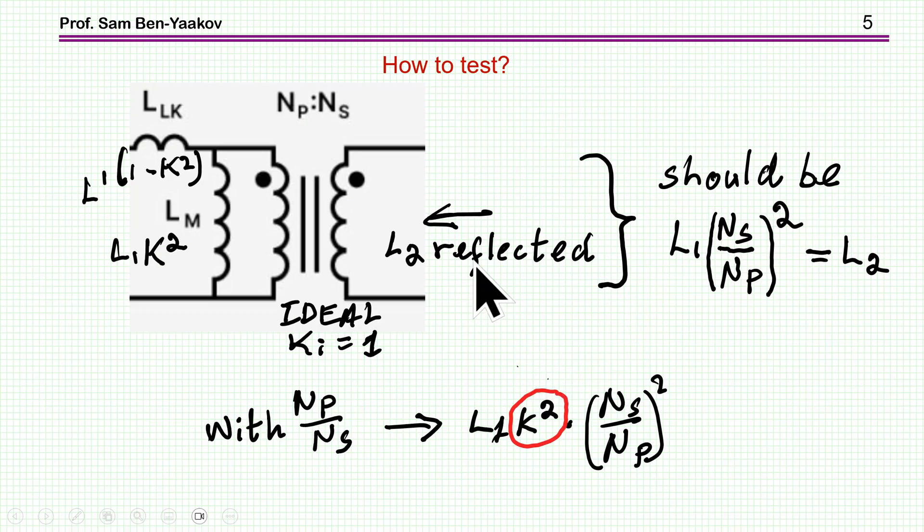Now, how can you tell that this ratio here, shown in the circuit that we are talking about, is incorrect? One way to do it is to look at the secondary with the primary open, and see if you get L2.